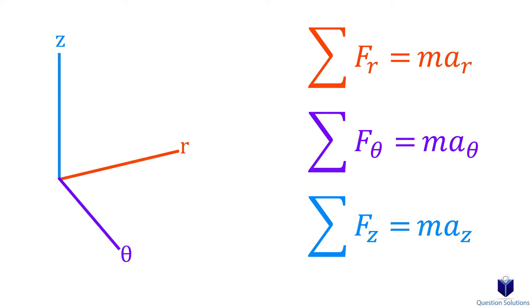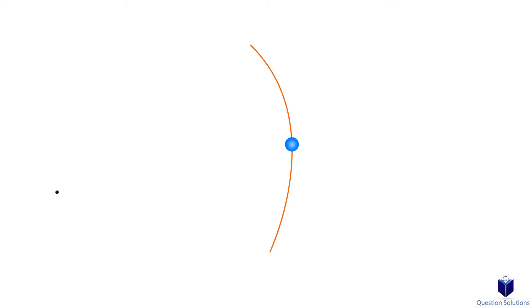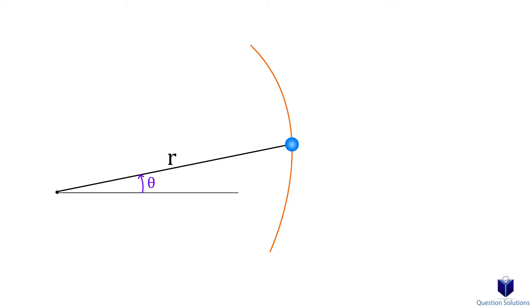Let's review the basics first. Imagine there is a particle moving along a path. From a fixed point, we can say the location of the particle by drawing a radial coordinate. If we then draw a fixed line, we can show the angle with respect to the radial coordinate using the theta symbol. This should be familiar to you — if not, please check the description below for the basics of cylindrical components.